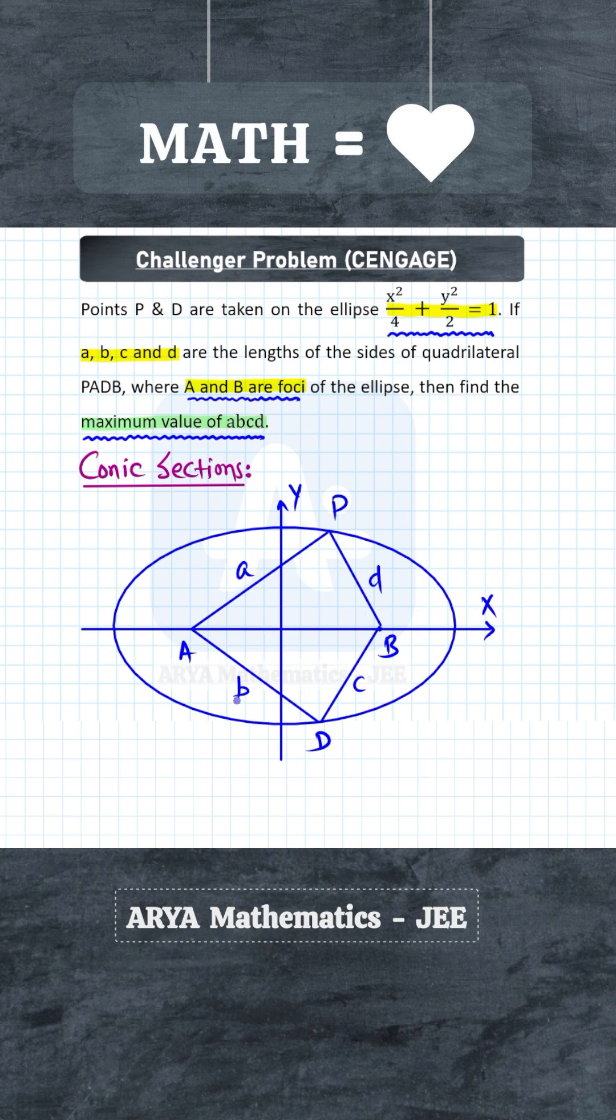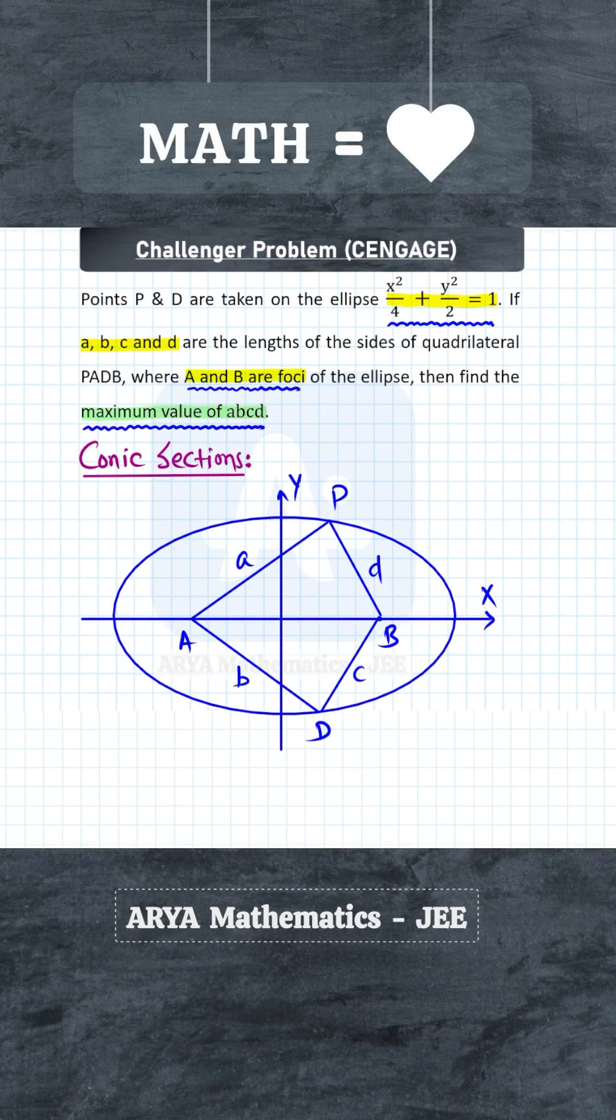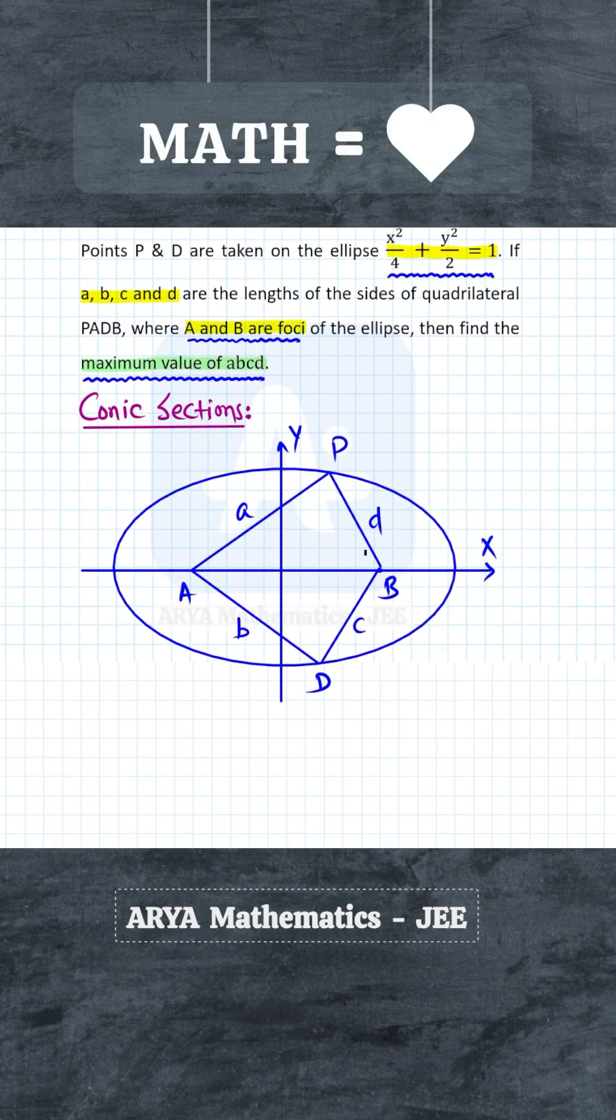So the problem is: what is the maximum value of the product of these four sides? That is, what is the maximum value of abcd? Now in this problem, first we have to find the sum of these four sides. That is, first we will try to calculate a plus b plus c plus d.